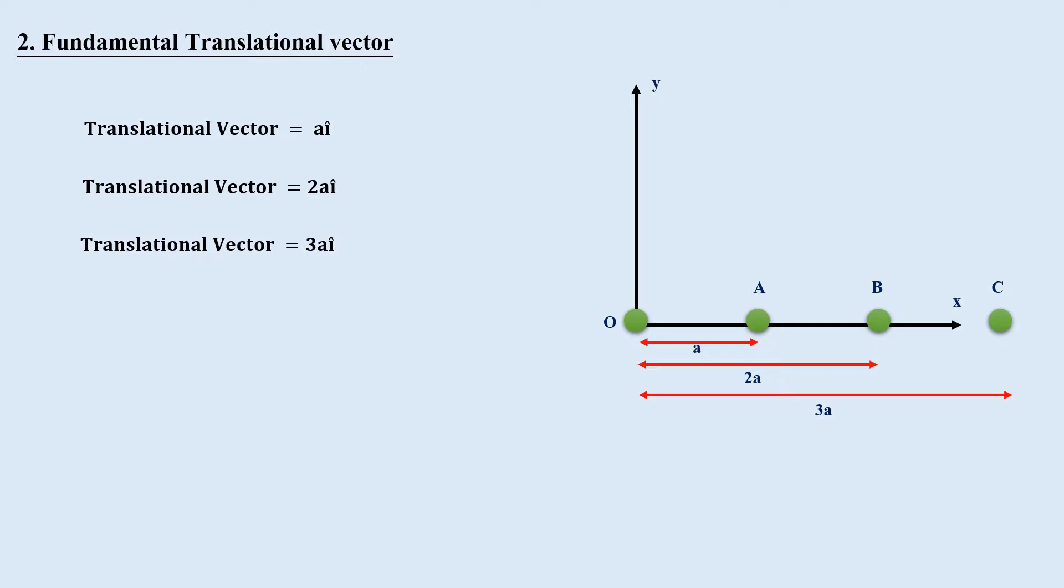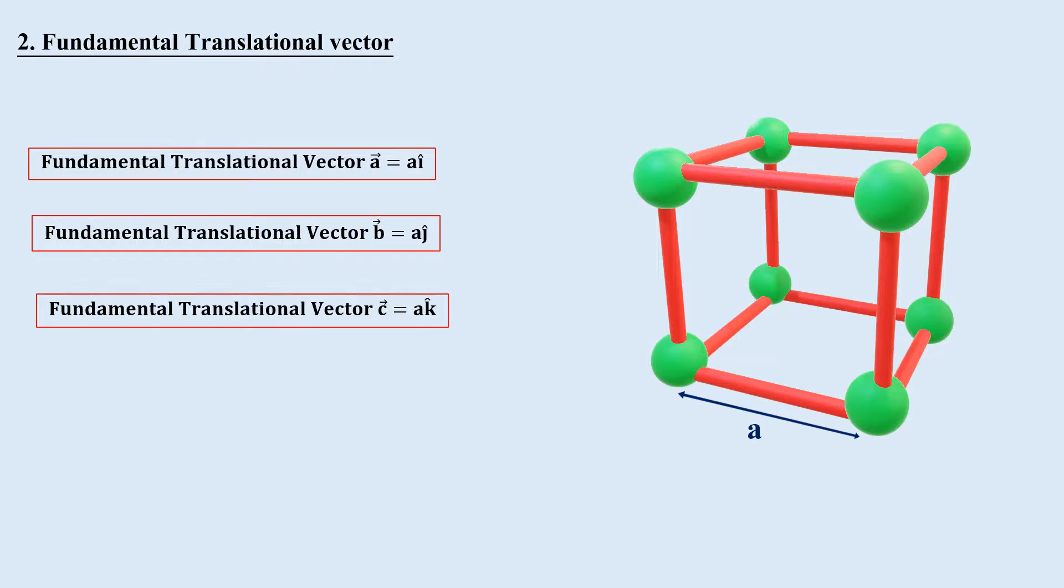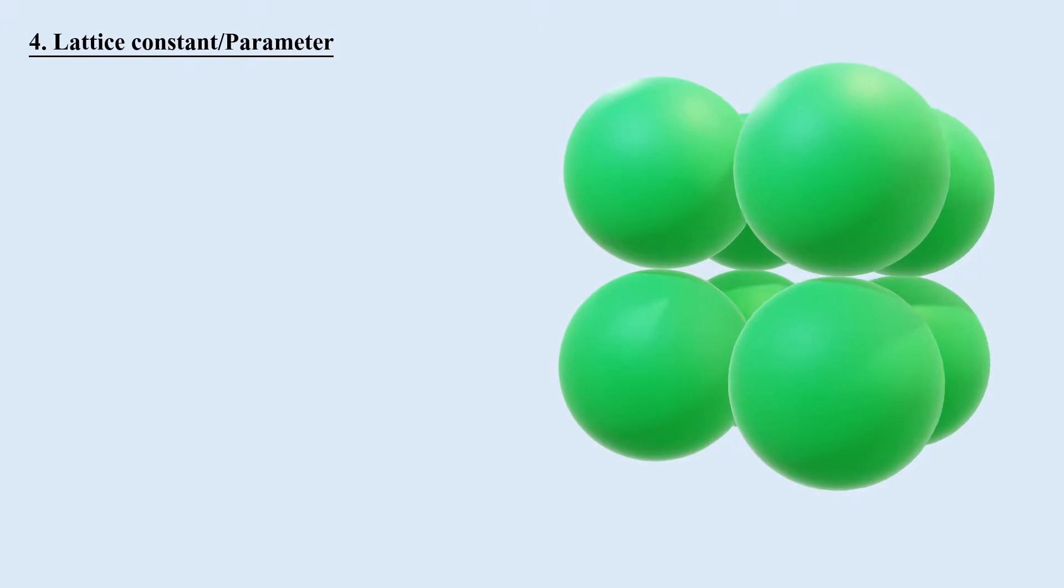In the same way, in general, the translational vector of this lattice will be nai cap, where n is the integer and ai cap is called fundamental translational vector. Similarly, fundamental translational vector of two-dimensional lattice will be ai cap and aj cap. And if lattice is three-dimensional having lattice parameter A, then its fundamental translational vector will be ai cap, aj cap and ak cap.